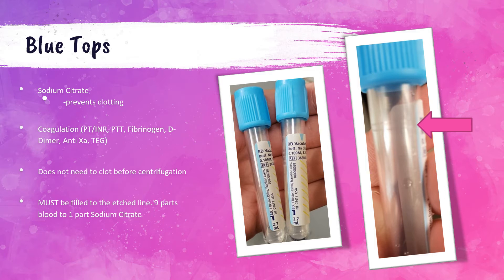These coagulation tests determine when a clot is formed and produce a result from that, so if the specimen in the tube is already clotted you're going to get an inaccurate result. There is a critically important piece of information on light blue tops: the etched fill line. As you can see in the arrowed picture, this is a minimum fill line — this is not a suggestion. These tubes must be filled to the etch line or they need to be rejected for redraw. This tube contains a very specific anticoagulation ratio of nine parts blood to one part sodium citrate.